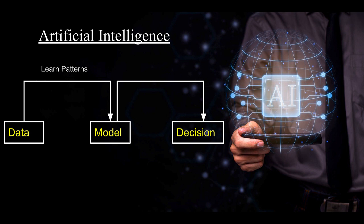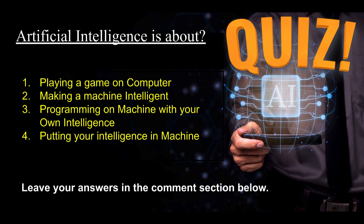They then create models, and these models are used to make decisions. Doing something smart is called artificial intelligence. I'm hoping now you have a better understanding of artificial intelligence.